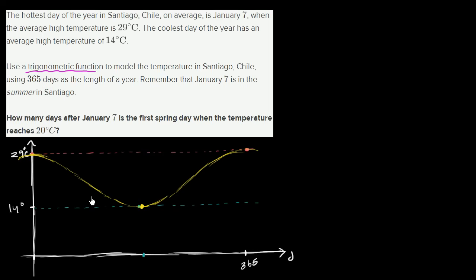So what I want you to do right now is, given what I've just drawn, try to model this. This right over here is capital T as a function of d. Try to figure out an expression for capital T as a function of d. Remember, it's going to be some trigonometric function.